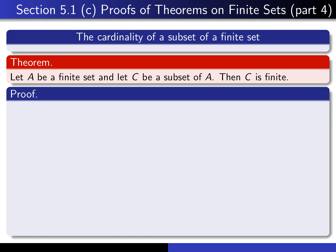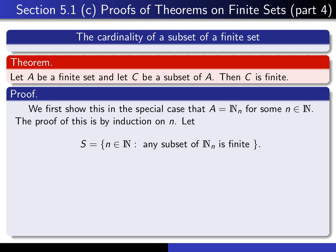Let's begin the proof. We're going to begin by proving the theorem in the special case that A isn't just any finite set, but in fact it's N_N for some N, and we're going to prove that by induction on N. For that purpose, it's natural to let S be the set of natural numbers N such that any subset of N_N is finite. Proving the theorem in the special case that A is N_N for some N is the same as proving that S equals the set of all natural numbers.